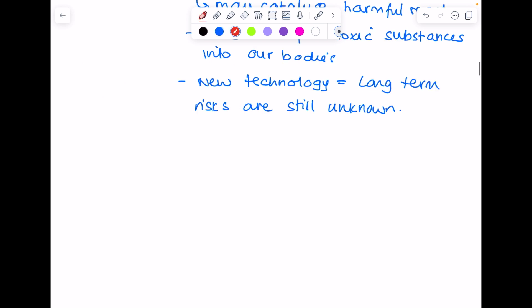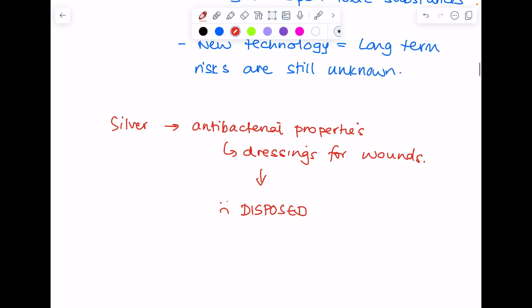And then one last thing to point out is that silver may be used as a nanoparticle because silver has antibacterial properties. So it can be used in dressings which are used to cover wounds. But the problem is when these dressings are disposed, so when they're thrown away because obviously they're dirty, then this silver gets into the environment and may have adverse effects on the environment, including all the animals and plants could be harmed.